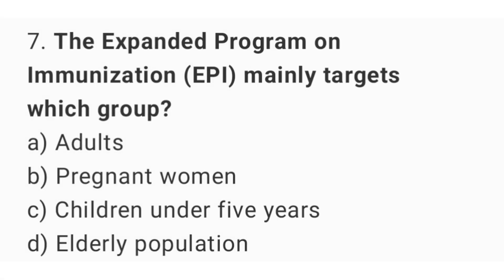Question number seven: the expanded program on immunization mainly targets which group? The right answer is option C: children under five years.